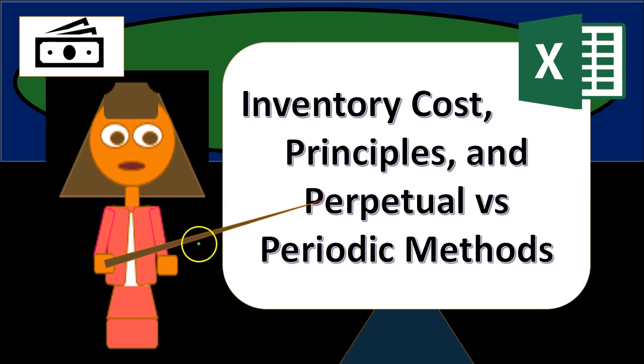Whereas in a periodic system, we will only do that periodically at the end of the day, week, or month, and record the entire period's worth of decrease in inventory and related increase in cost of goods sold.